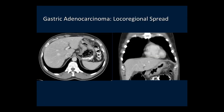Once we identify the tumor on CT, the goal is to stage it. Gastric carcinoma infiltrates and spreads directly into adjacent structures, including the lesser and greater omentum. We can see tumor extension by linear strands and nodules into the greater omentum on both axial and coronal images.